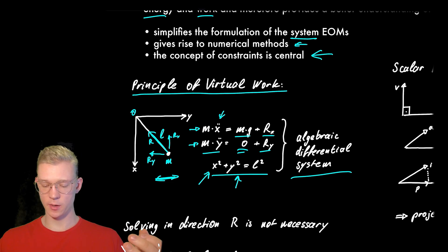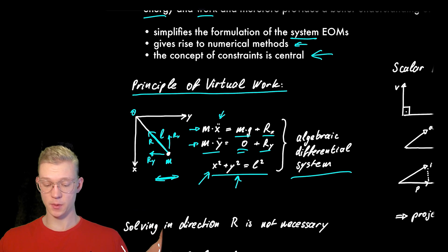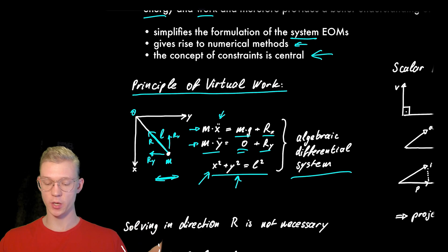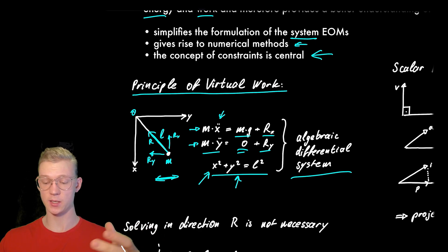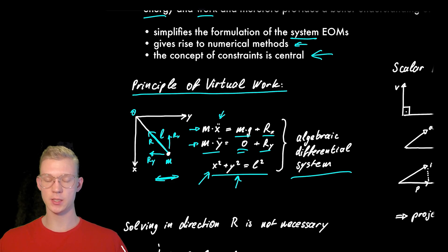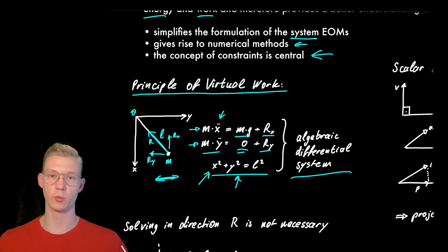You might think: why do I have a system for basically a single point mass moving in 2D space and I have three equations for something that is not really complicated? To simplify this, we will use the principle of virtual work. But the first thing we have to do is revisit what we already know about the scalar product and the dot product.